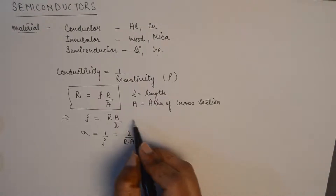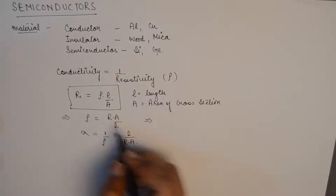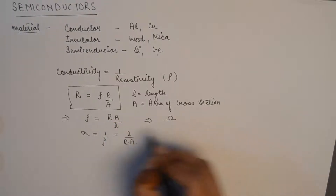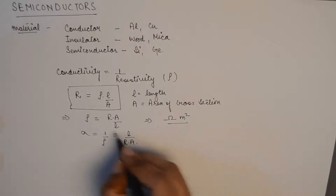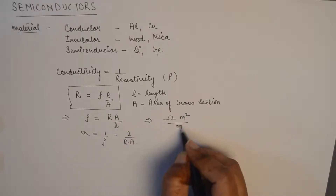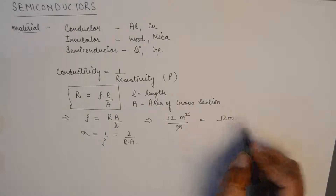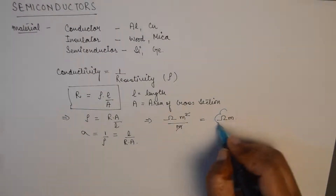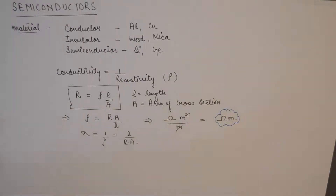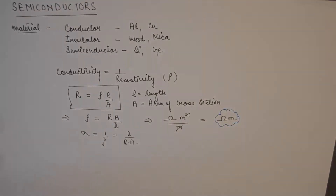We can find the units from the formula itself. The unit for resistance R is ohms and for area it is meter squared, and for length it is meters. The meter cancels, and the unit for resistivity comes out to be ohm-meter. Ohm-inverse meter-inverse then becomes the unit for conductivity.